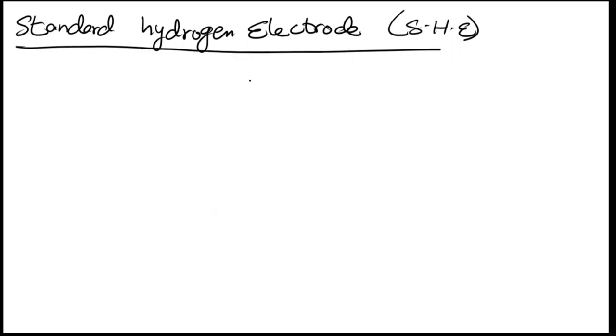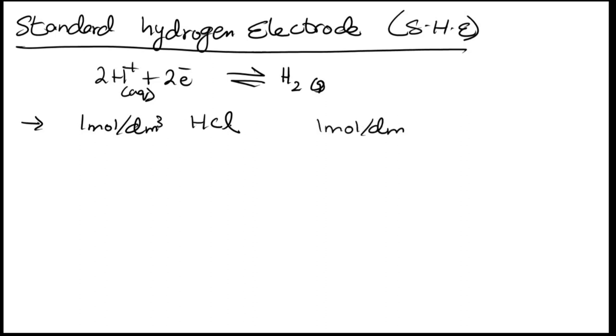What is standard hydrogen electrode? We are going to use reference electrode. It is based upon the following. This reaction is happening in standard hydrogen electrode. Gaseous form H2 in aqueous form. In standard hydrogen electrode, one mole per dm3 solution is HCl. H+ ion is present.